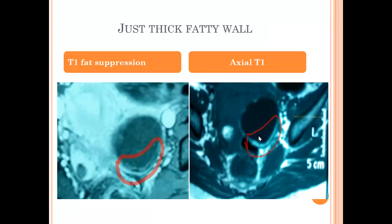Another case of bilateral teratoma: one side shows a fat ball inside that is suppressed on fat suppression. On the other side, the left, there is only a thickened bright wall on T1 that is also suppressed on fat suppression — the only sign here is just a thickened fatty wall.